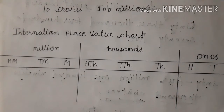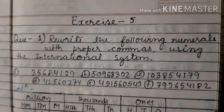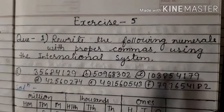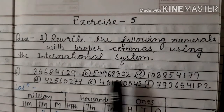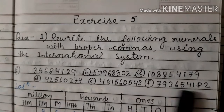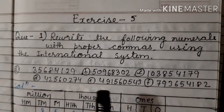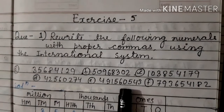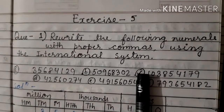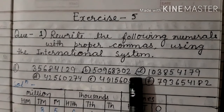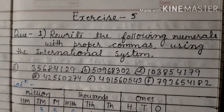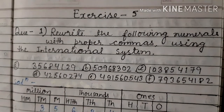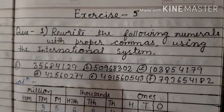Now Question 1: Write the following numerals with proper commas using the International System. हमें जो given numbers हैं इनको proper comma put करके separate करना है, International System के according। I will solve one part for you and similarly you can solve the remaining parts.